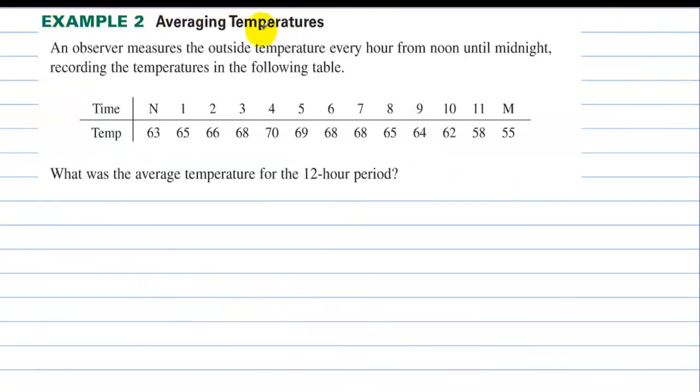Example 2, averaging temperatures. An observer measures the outside temperature every hour from noon until midnight, recording the temperatures in the following table. What was the average temperature for the 12-hour period? Well, we're going from noon to midnight, and here are all the temperatures every hour.